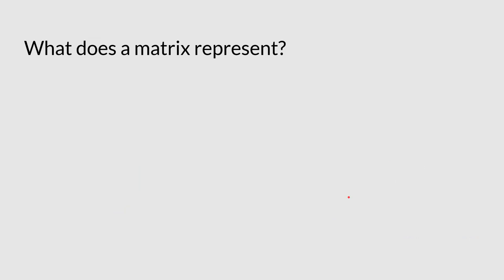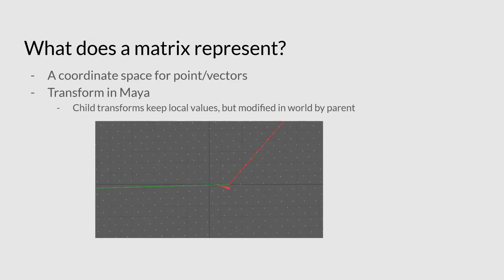So what does it represent again? It's a coordinate space for points and vectors. It's basically what your transform can do in Maya. All of the things that you can represent with the matrix is what you can do with the transform in Maya. You can sort of think of it as, if you look at this representation here, each of these points is just one of many possible locations in that coordinate space. Imagine that this is a group and all of these different points is like a locator or just another transform inside that group.